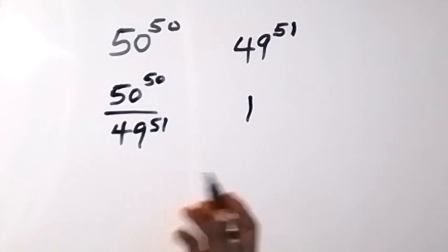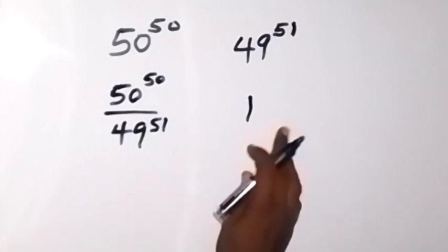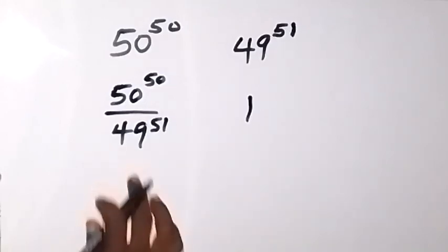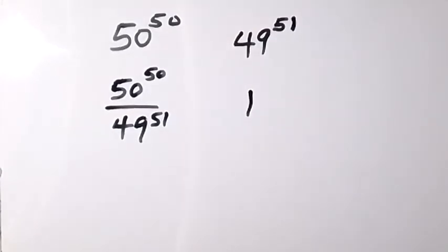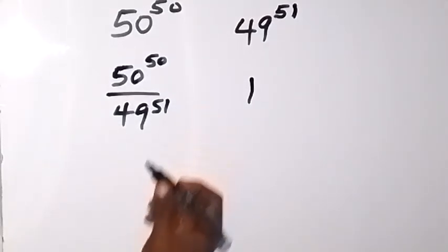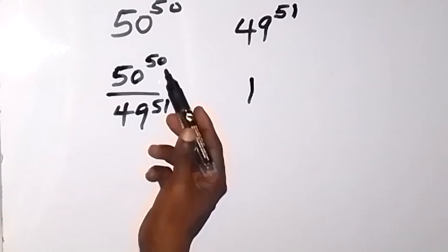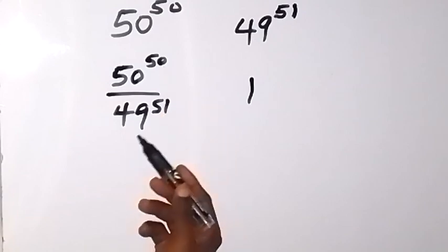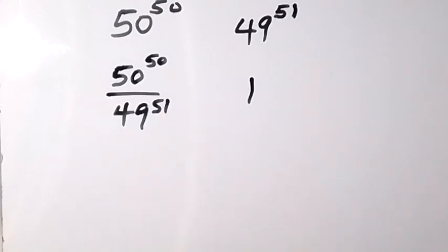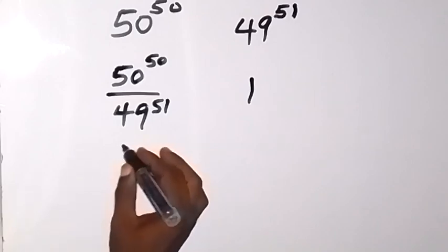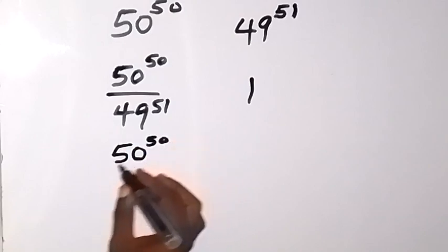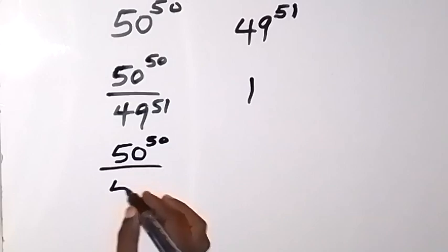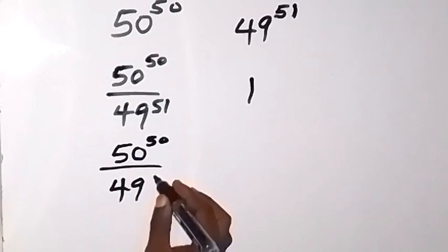So now let's work — obviously this side has no problem, this is 1. So let's work with this side to see what we have there. We can make the exponents equal. Since this is raised to the power of 50, we can also let 49 be raised to the power of 50. That means we subtract 49 raised to the power of 1 away, so we are going to have 50 raised to the power of 50 divided by 49 raised to the power of 50.